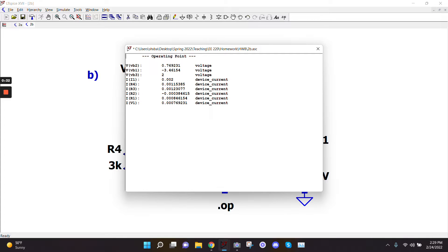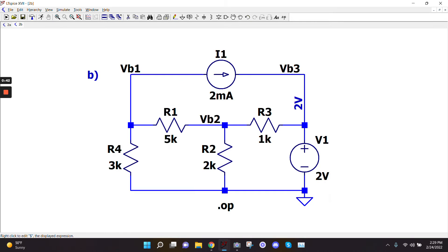And VB3 is obviously 2 volts. That should be obvious to you because of the way the power source is connected. If at this point it's not obvious to you that this voltage is 2 volts, you definitely need to go back and do some reviewing because this power source's minus terminal is connected to ground. So the plus terminal voltage is just whatever the rating is of the battery.